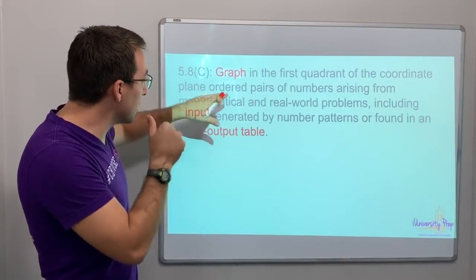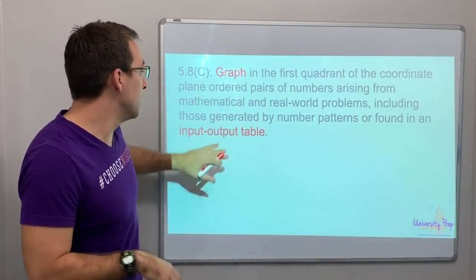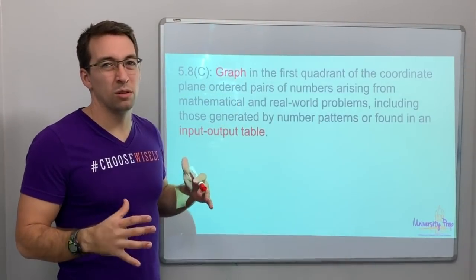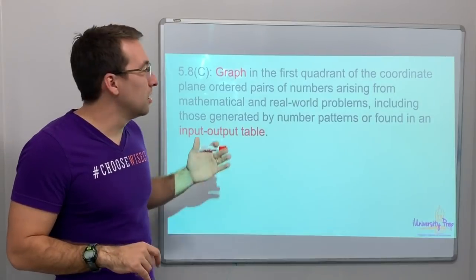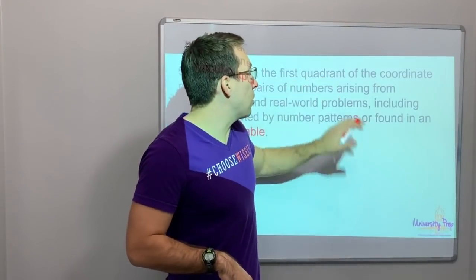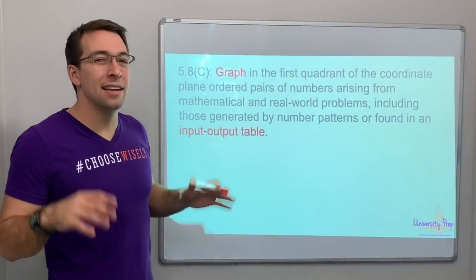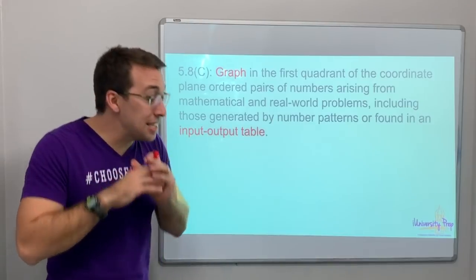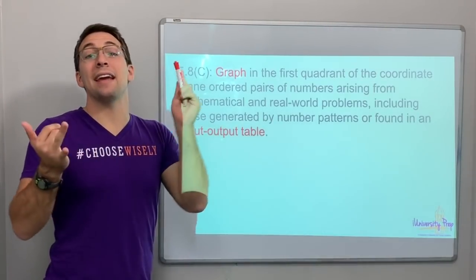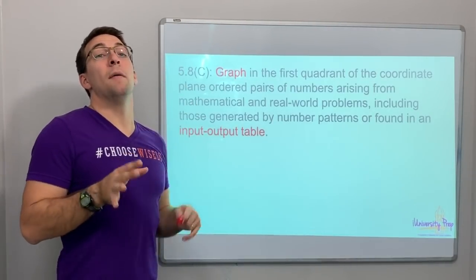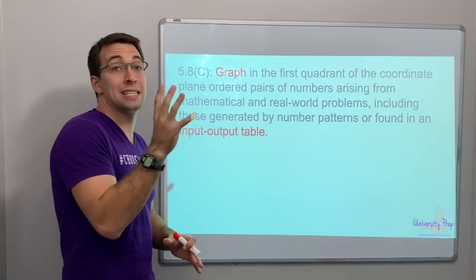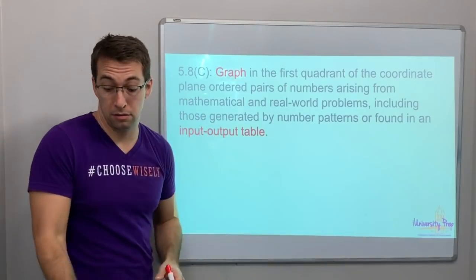And again, it's talking about graphing, and now you have an input-output table. Graphing, first quadrant, coordinate plane. It's the same as 5.8a and b, but this one you're just going to have more questions like this.